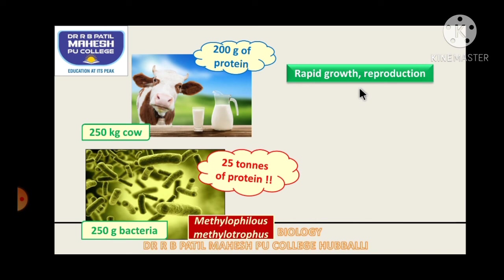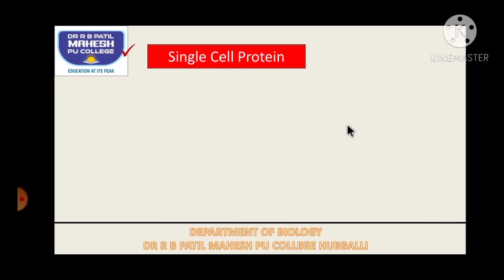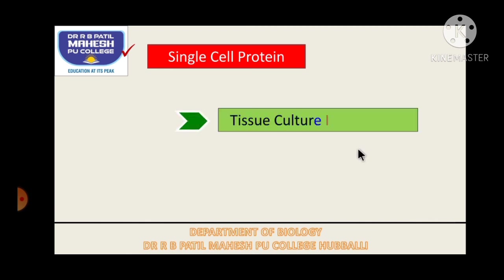Single cell protein is rapidly growing and has the highest reproduction rate. Due to its high rate of biomass production and growth, it produces 25 tons of protein per day. Mushrooms are now eaten by a large population and it is a growing industry, which makes us believe that microbes too would become acceptable food. In the next video, students, we will discuss the modern genetic engineering program called tissue culture. Thank you, students.